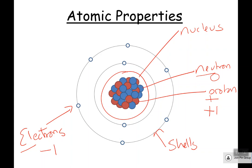They also have mass. If we talk about protons, we say they have a relative mass — the reason we call it relative is because it's compared to the other particles. Protons have a relative mass of one. Neutrons also have a relative mass of one. Electrons: sometimes they'll tell you the relative mass is zero because it's so small, but it's about one over two thousand — so a two-thousandth of the mass of a proton or neutron.